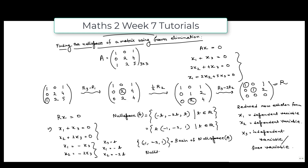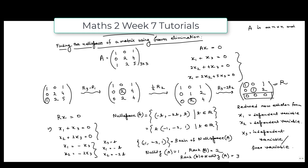Clearly, the nullity of A is 1. There is one zero row and two non-zero rows, so the rank of A is 2. This satisfies the rank-nullity theorem: rank(A) + nullity(A) = 2 + 1 = 3. The rank-nullity theorem states that for an m×n matrix A, rank(A) + nullity(A) = n, and here n = 3. We have verified the rank-nullity theorem.